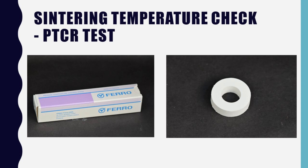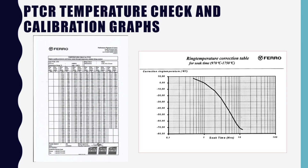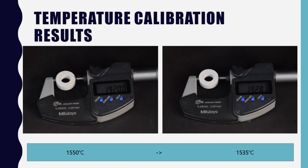A test ring can be used to measure the actual temperature by measuring the reduced size after a sintering cycle. You can measure the shrunk size and find the corresponding temperature in the table on the left, which is based on one hour. You can use the table on the right to compensate for holding time at the highest temperature during sintering. The recommended temperature of the material is 1,530 degrees. I set the display temperature to 1,530 degrees, but the actual temperature measured was 1,550 degrees.